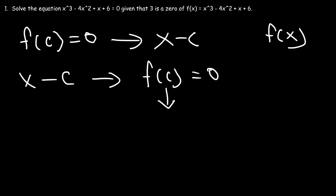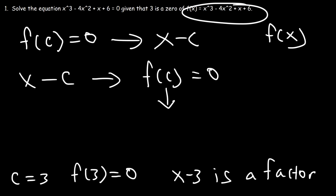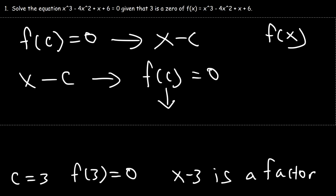c is considered to be a zero of the function. For example, if 3 is a zero of the function, then f(3) = 0, which means x minus 3 is a factor. So this function is divisible by x minus 3, and we can use synthetic division or long division to divide by x minus 3.